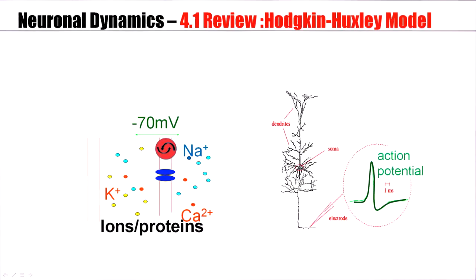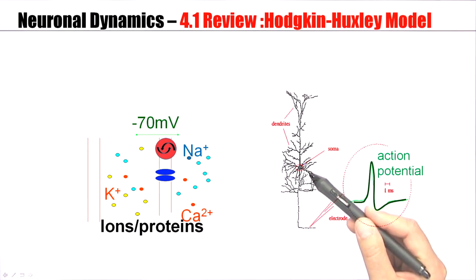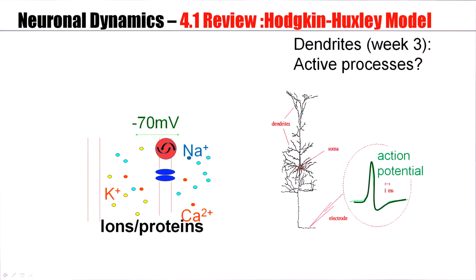Last week we looked at detailed neuron models. For example, we made a model of a pyramidal neuron in cortex. Such a pyramidal neuron has a rich dendritic structure. And we have seen last week that there are active processes in a dendrite that give rise to a ping pong between backpropagating action potentials generated at the soma and dendritic spikes.